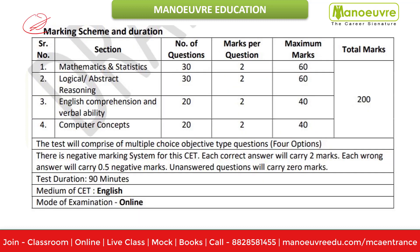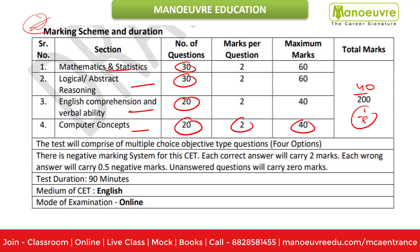Alright, this is the paper pattern guys — please pause the video and go through it. Mathematics: 30 questions, Logic: 30, English: 20, and Computer Concept: 20 questions into 2 marks, totalling 40 marks. So out of 200, 40 questions will be coming from Computer Concept, which is one fifth of the paper. Very importantly, there is negative marking of 0.5, so your answers have to be right. Total time is 90 minutes and the exam will be in online mode.